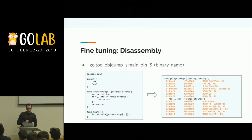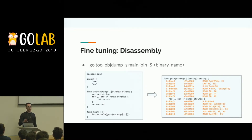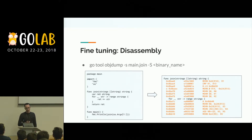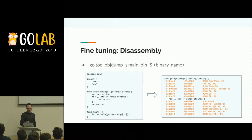Another tool I used in this project is objdump. It's a very simple tool but it can produce assembly output interleaved with real source code instructions, so we can see how a function is converted to machine code in order to optimize it. Actually, this is based on a patch a colleague of mine submitted to the Go community.